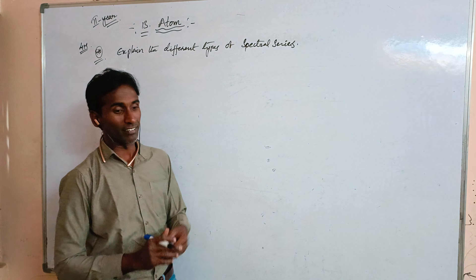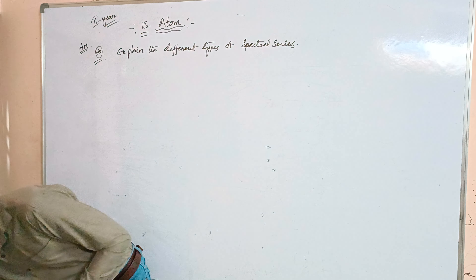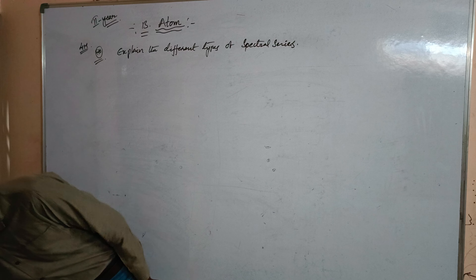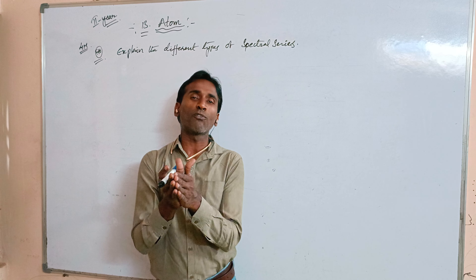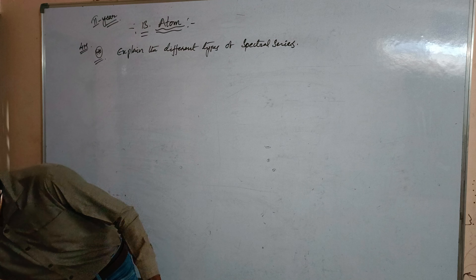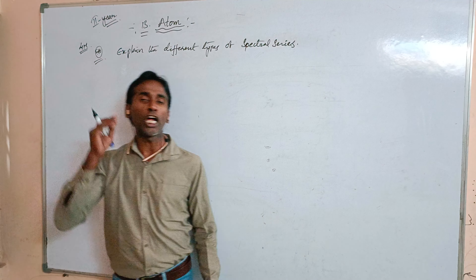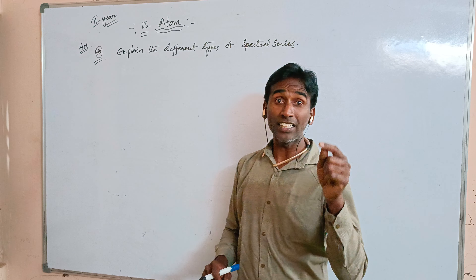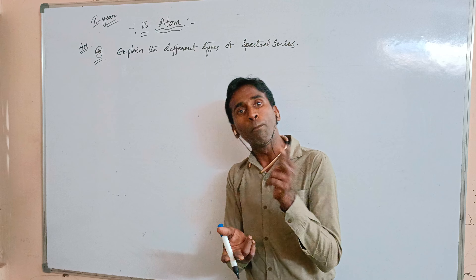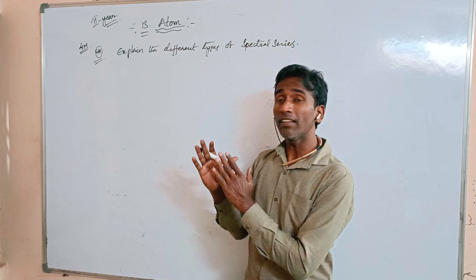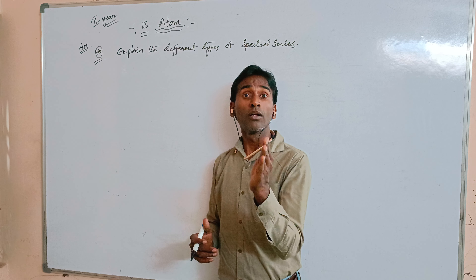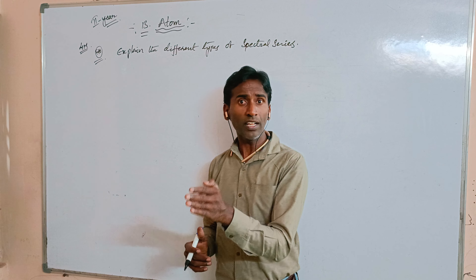Hello students, welcome back to my channel. I'm going to take the second year topic from the 13th chapter 'Atoms.' From this chapter you will get two form of questions. The first question is: what are the limitations of Bohr's theory? The second question is: explain the different types of spectral series. From first year chemistry, you know the hydrogen atom has five spectral series: Lyman, Balmer, Paschen, Brackett, and Pfund.